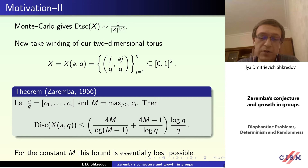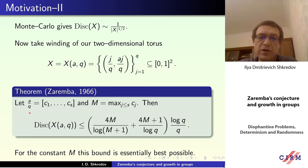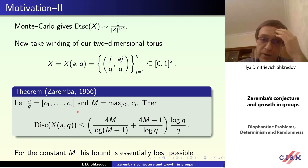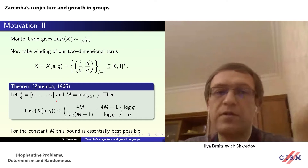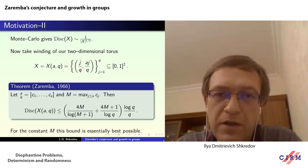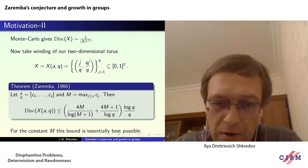That was the motivation of Zaremba: is it true that for any q, I can find a such that all partial quotients of a over q are bounded by some constant m? If so, then I obtain an optimal result for discrepancy, obtained on a very concrete and natural set.